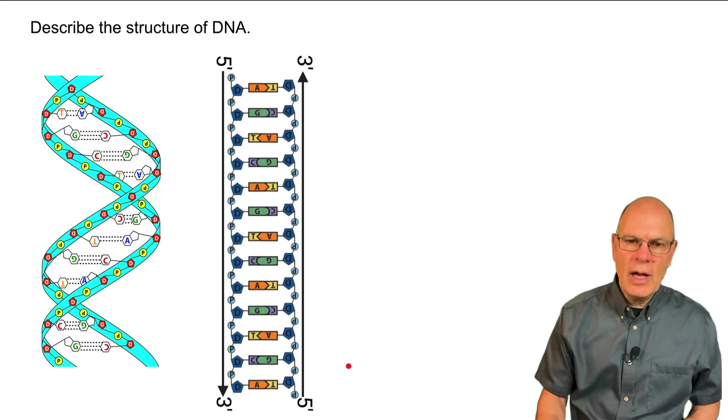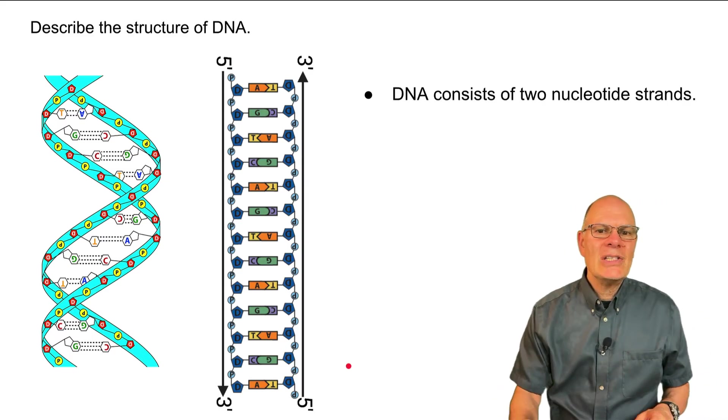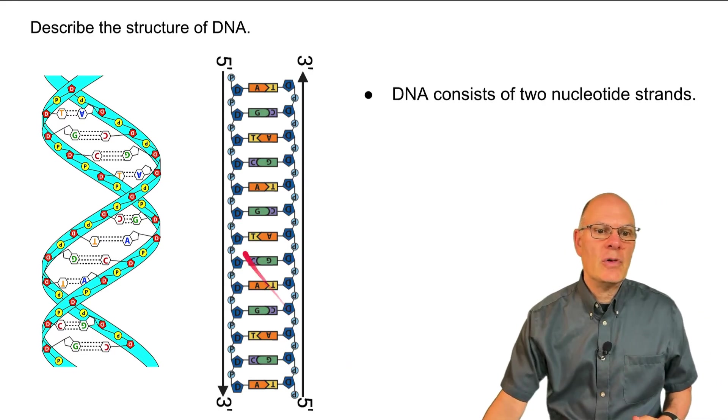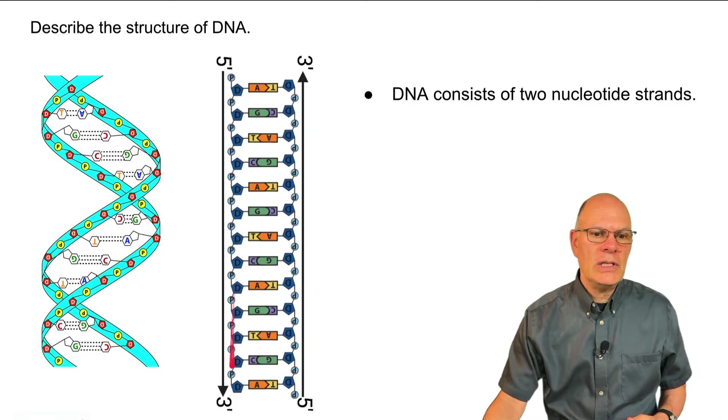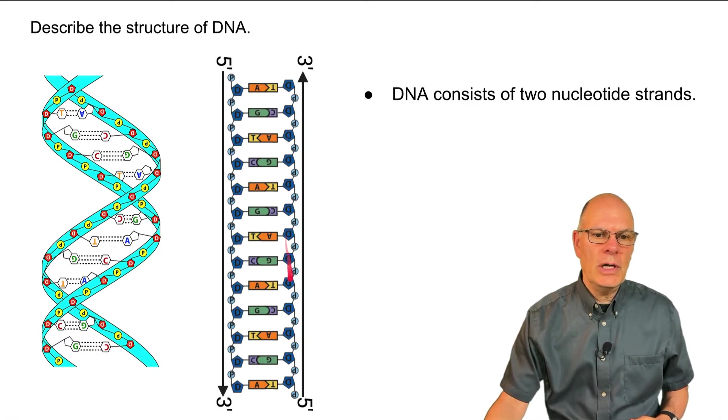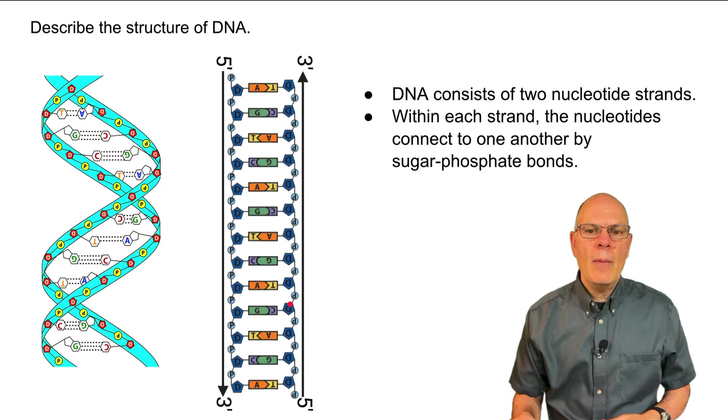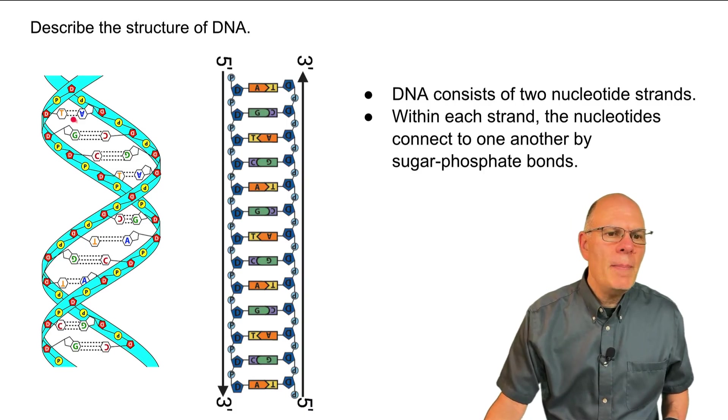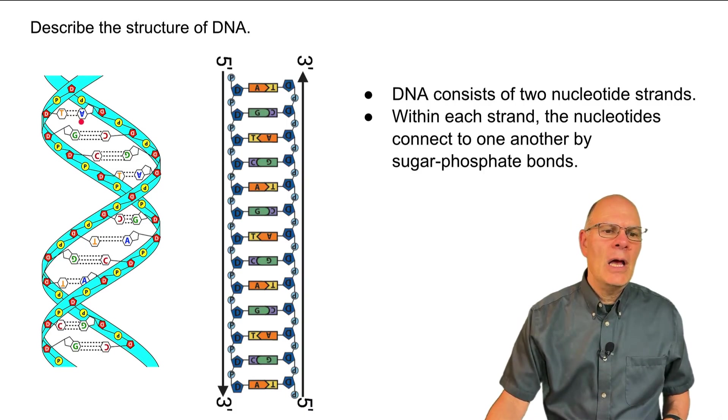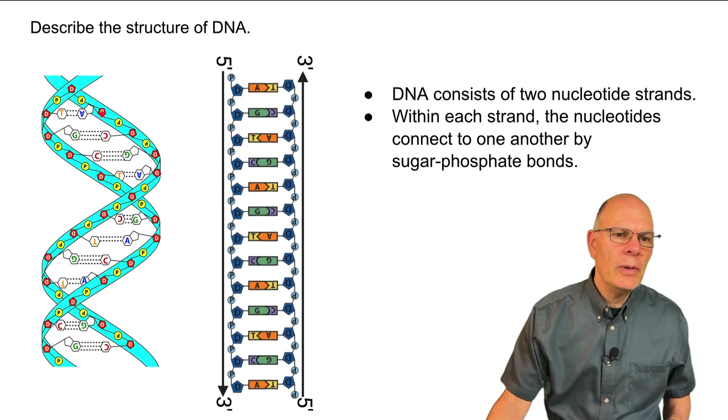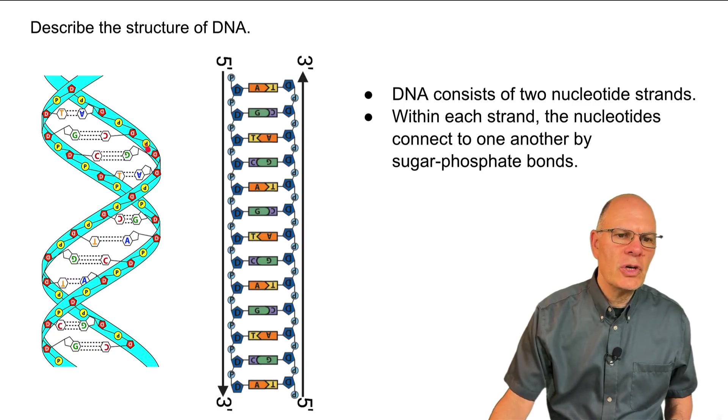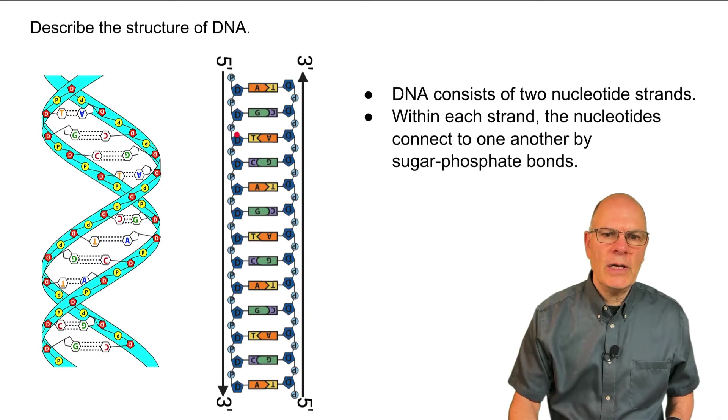Now let's talk about the structure of DNA. DNA consists of two nucleotide strands. So easier to see in this flattened out version. Here's one. Here's the other. Within each strand, the bases are connected by sugar-phosphate bonds. So here's a sugar, here's a phosphate, here's a sugar, here's a phosphate. Same thing over here.